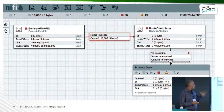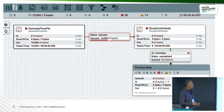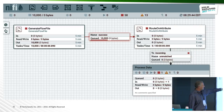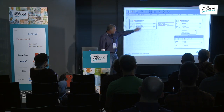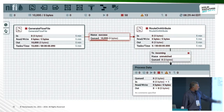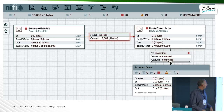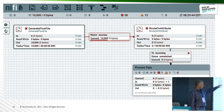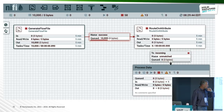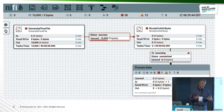Putting these terminologies together: we have a generate flow file processor, a connection between processors labeled 'success', a route-on-attribute processor, and that goes to a 'process data' process group. Each of those is a processor, and where you see the queue is the connection between them.